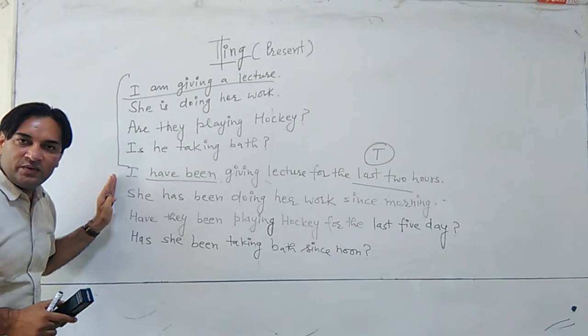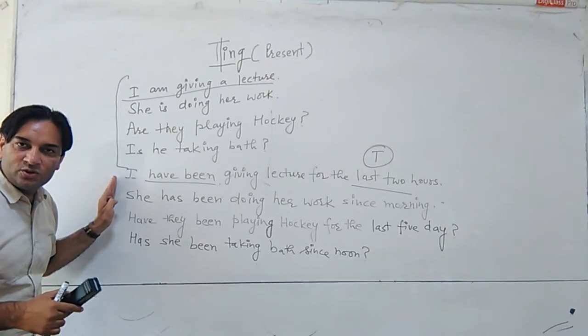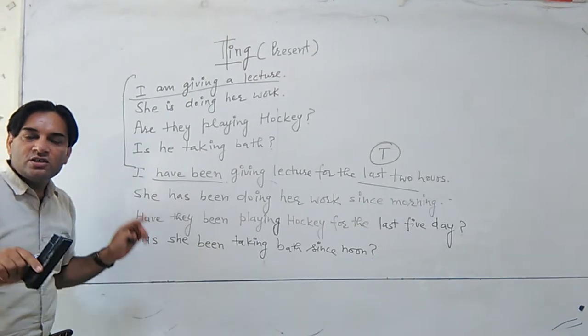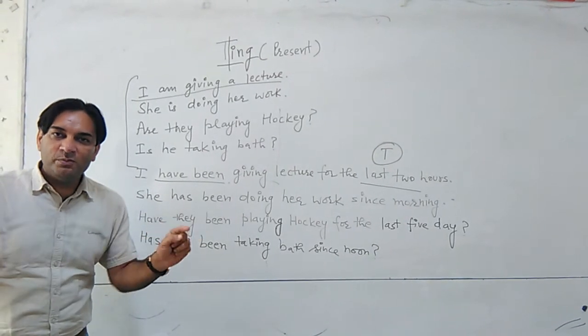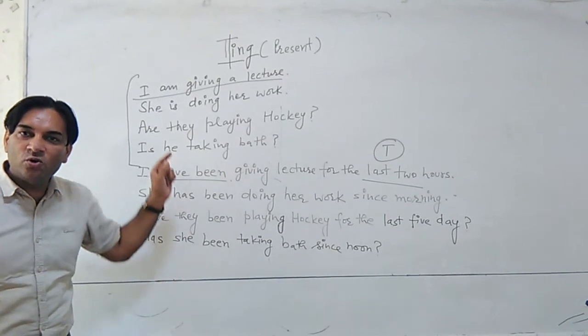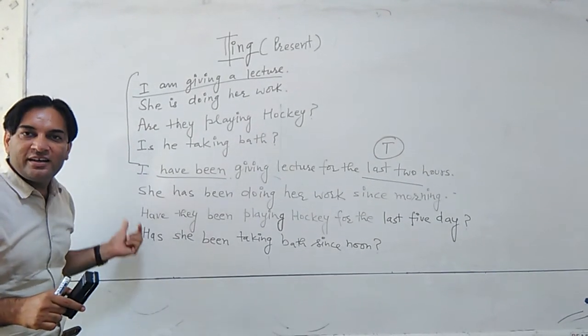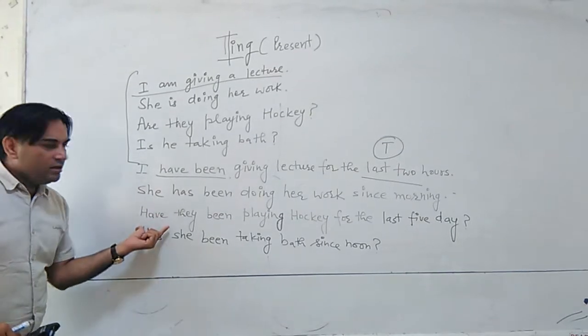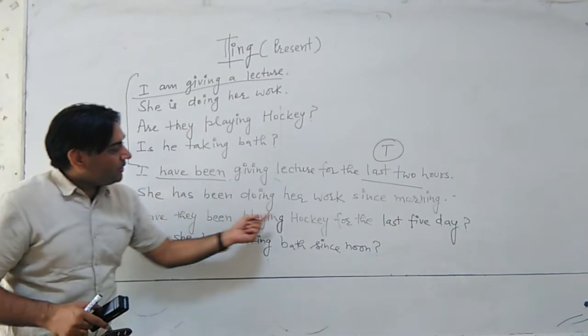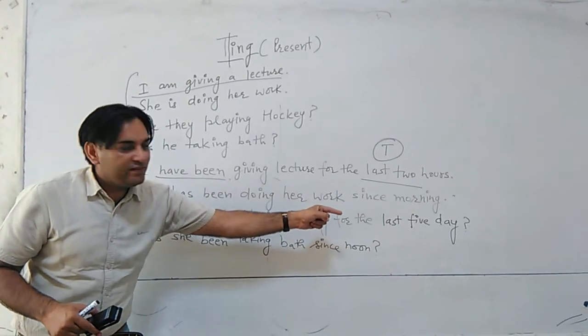This is the way we have to tell BEEN actions. How to ask about BEEN actions. Some actions which are continuous, but time is there. These are not only ING actions, these are BEEN actions. How to ask? Use has/have in the beginning. Like, have they been playing hockey for the last five days?